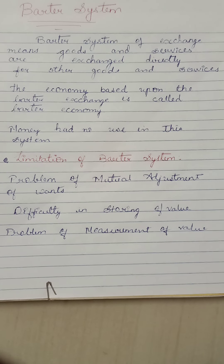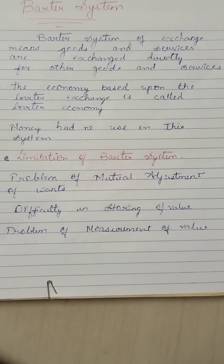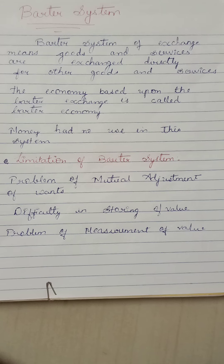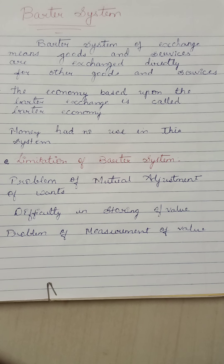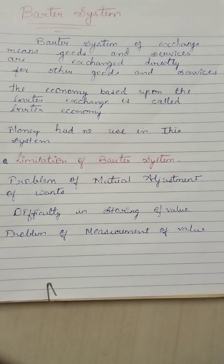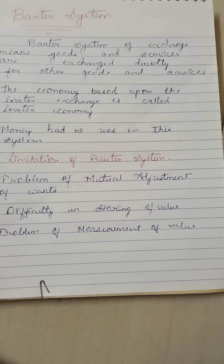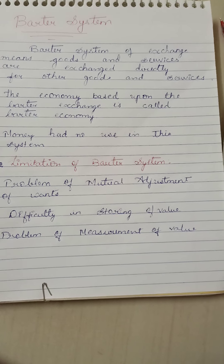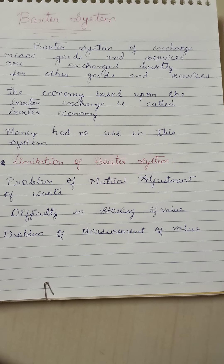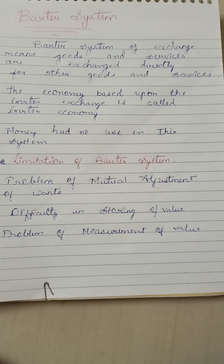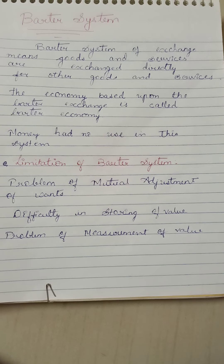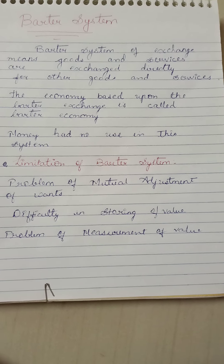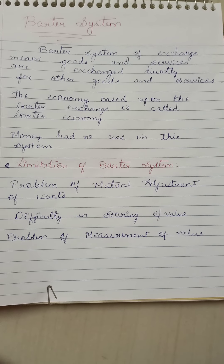If I give a short introduction regarding that — as we all humans, wants are unlimited, and a person cannot satisfy all wants by oneself. In the past, human beings used to satisfy their wants by exchanging goods and services among themselves. Such a system of exchange for satisfying their wants is called the barter system.